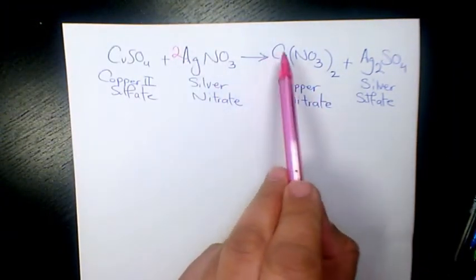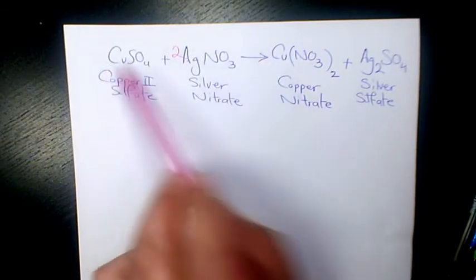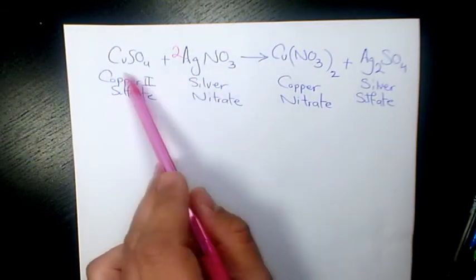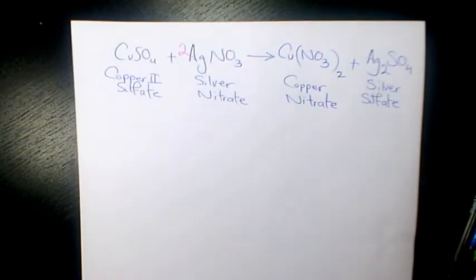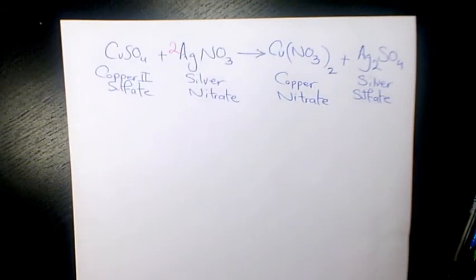We are good. Cu and Cu, we have one on each side, that's good as well. And SO4 and SO4 is 1, so that's balanced. It means that per one mole of copper(II) sulfate, we need two moles of silver nitrate in order to produce one mole of copper nitrate and one mole of silver sulfate.